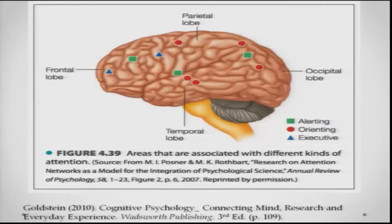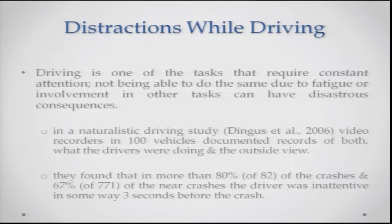Here is a figure of the brain borrowed from Goldstein's textbook of cognitive psychology. You can see these different networks of attention and how they are organized or scattered across the brain. We began this chapter on divided attention with the example of distractions while driving. Driving is one task that requires constant attention, and not being able to provide it — due to fatigue or involvement in other tasks — can have and does have disastrous consequences.